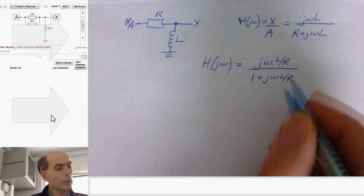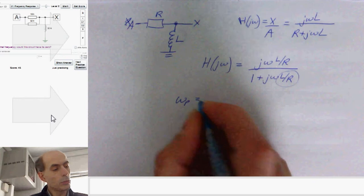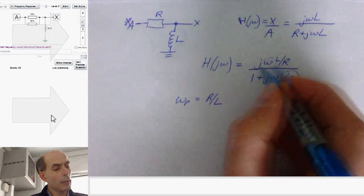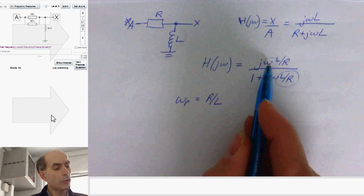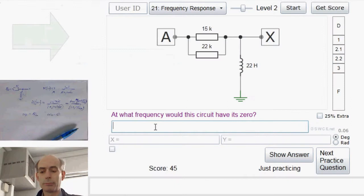From which we can clearly see that the pole is here. That would be omega pole would be R over L. And the zero up here, well, that's just at zero hertz. There's no 1 plus here. That's a zero at zero.